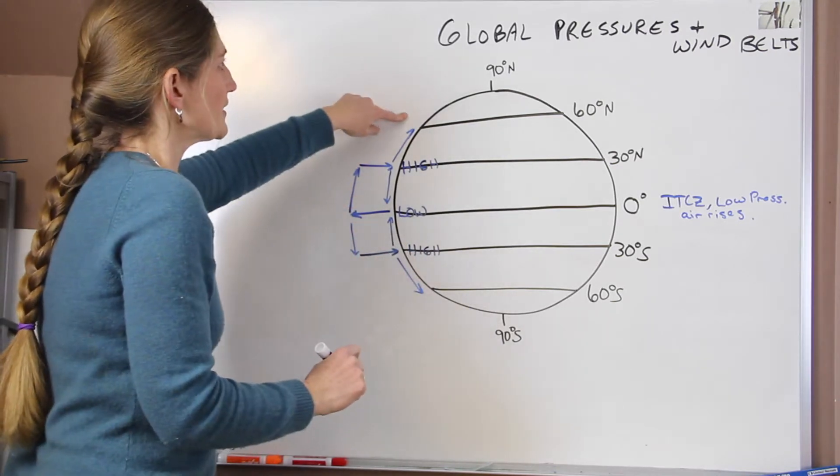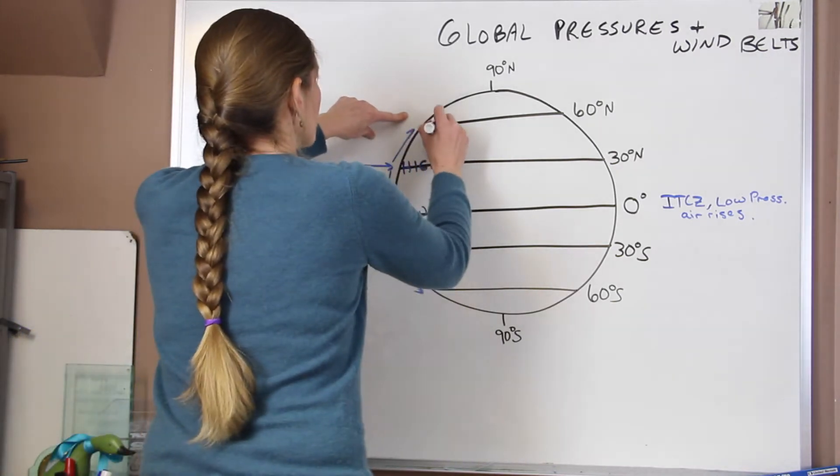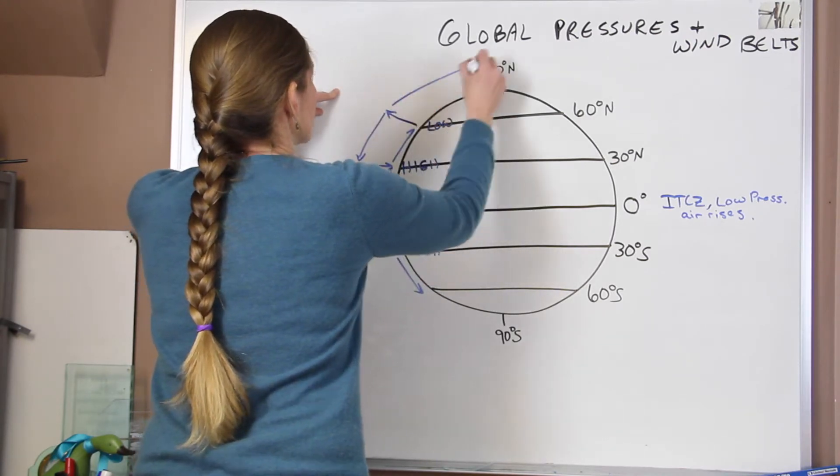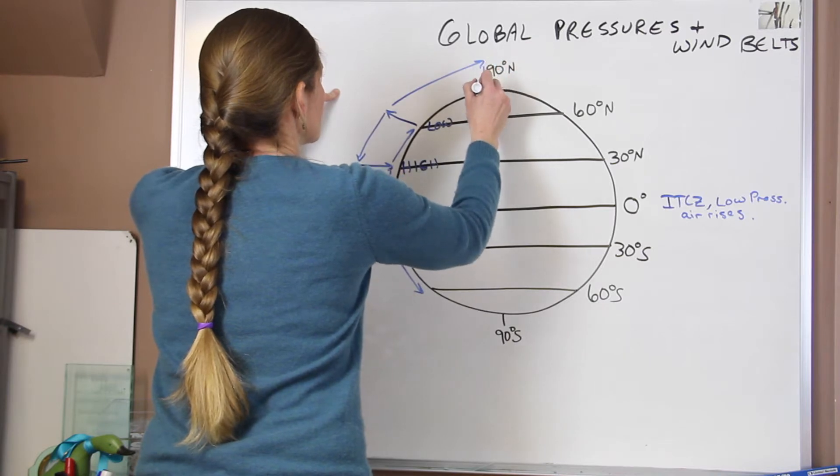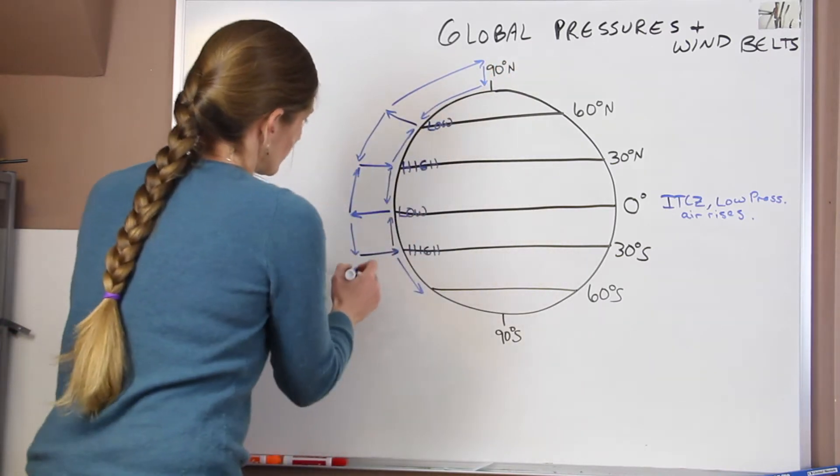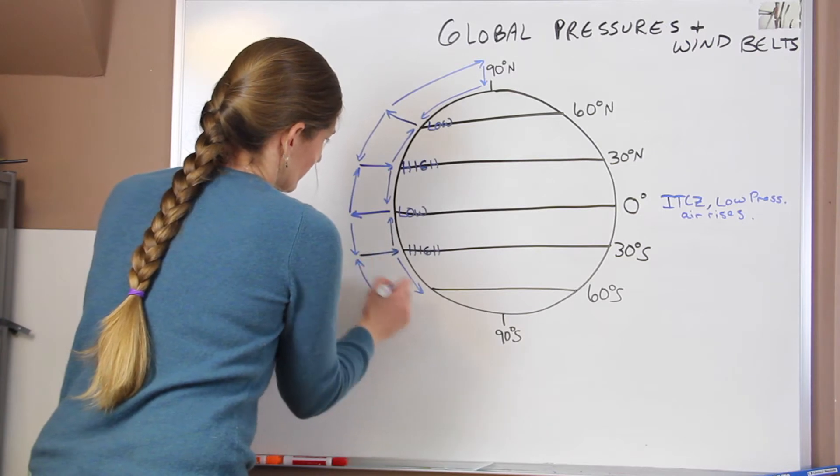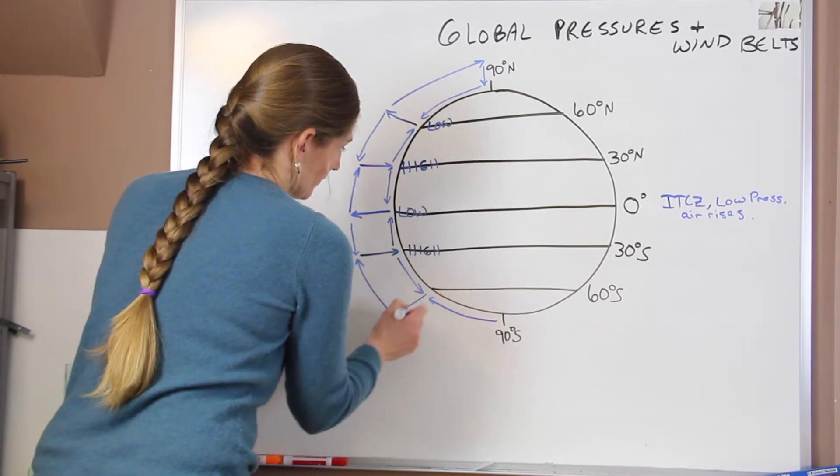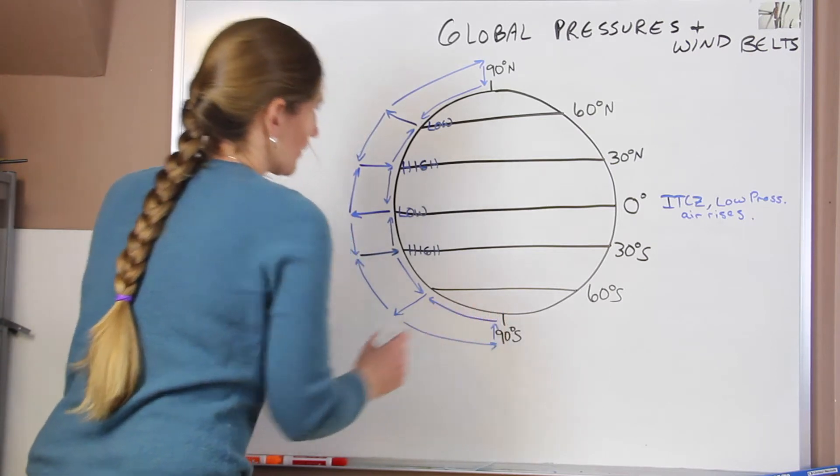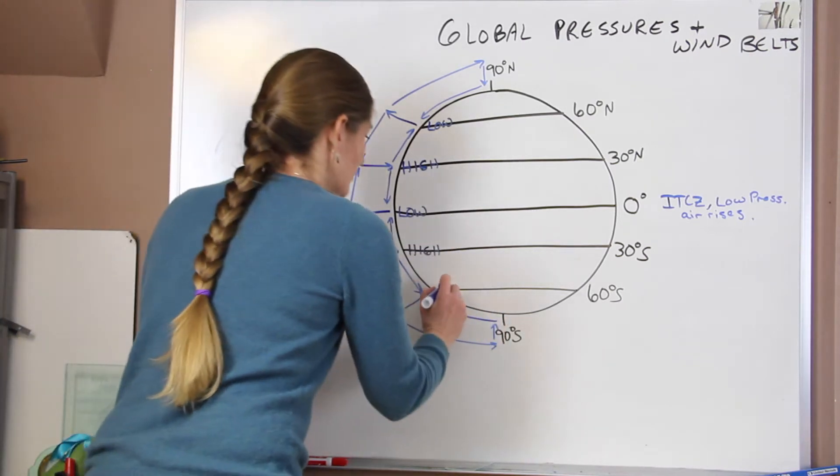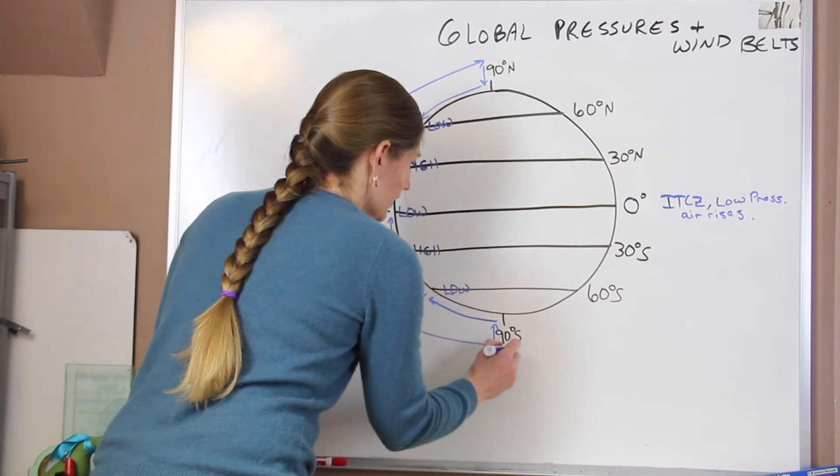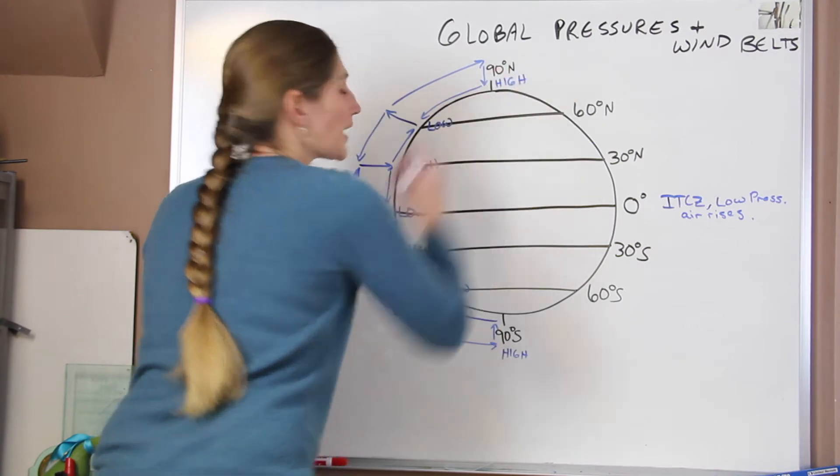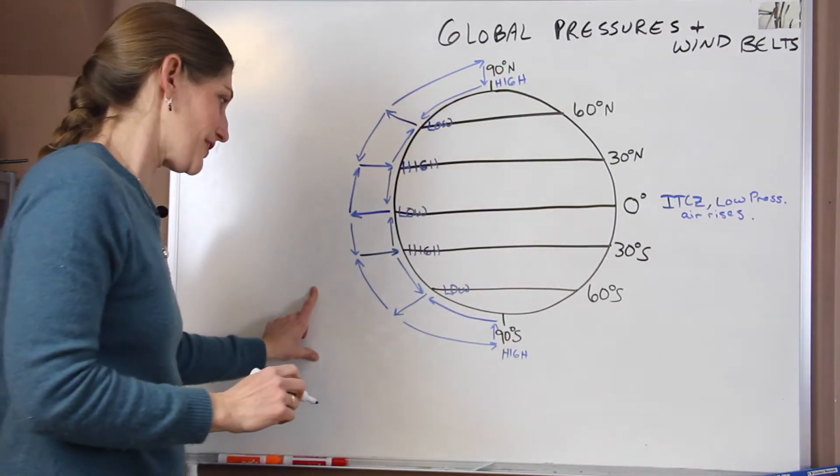And then we know that our wind goes from high to low at the surface. At 60 degrees north latitude, we have another low pressure. So the air rises. It's going to diverge aloft. And then it sinks back at the poles. So we have a low, and then a high, and a high. I told you it's going to get complicated with each one of these things.